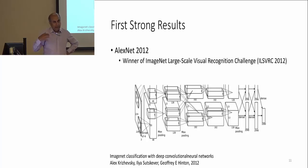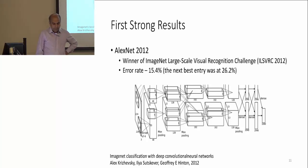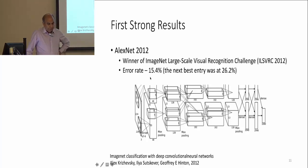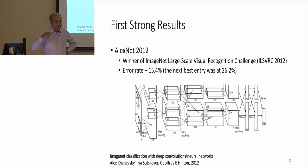The strong results came in 2012 with AlexNet on the ImageNet problem, which has a thousand different categories. The 2012 result was the first time the error rate was decreased significantly — from a previous error rate of 26% down to almost half, at 15%. Error rate means how many errors you make classifying a test image into the correct class out of one thousand.